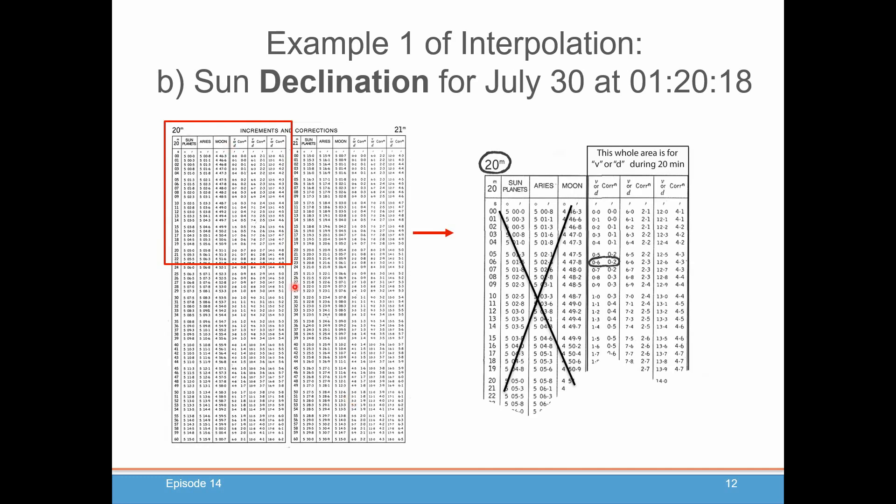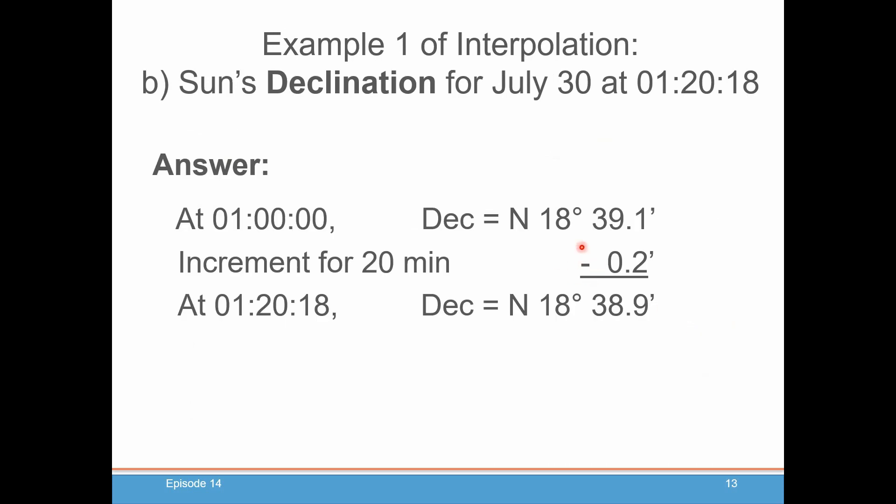Again, we go to our 20-minute table. If you look over here, you get this nice little interpolation table. We look up 0.6 and it says for 20 minutes, that comes up to 0.2. And because we knew it was going down, we have to subtract it from our declination that was at 0 100 hours. And we get that it was north 18 degrees, 38.9 minutes. That's our declination at 01 20 18. Again, really nice. The almanac does all our interpolation for us.